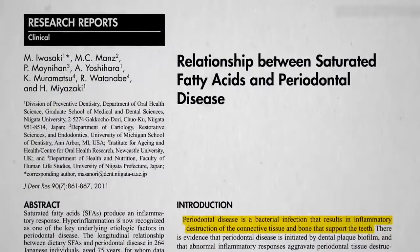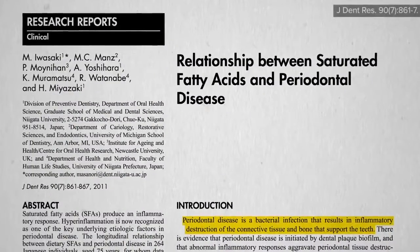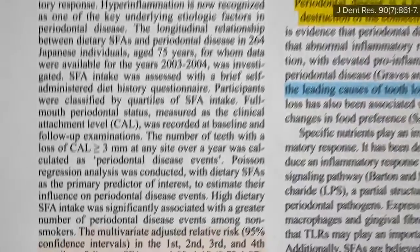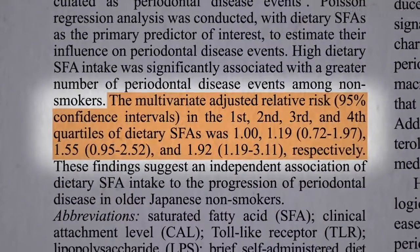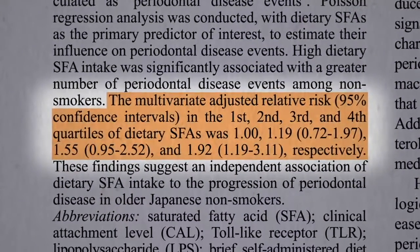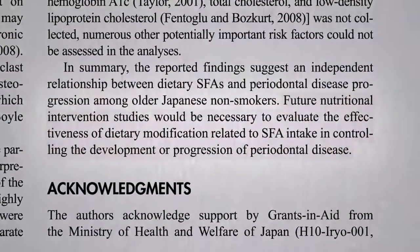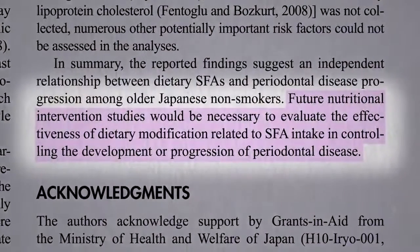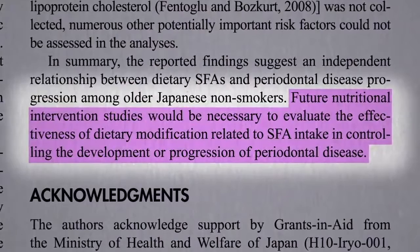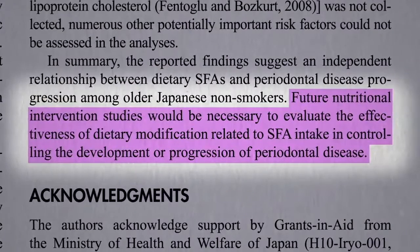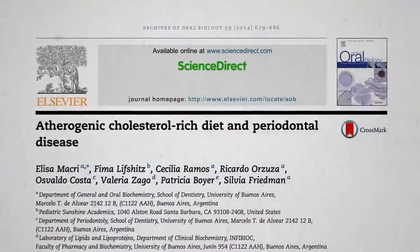But do people who eat more saturated fat get more periodontitis? About double the risk at the highest levels of intake, and this study was in Japan where they eat less than half the meat and dairy compared to the U.S. The only way to know for sure is to do an interventional trial where you change people's diets and see what happens — you have to put it to the test.